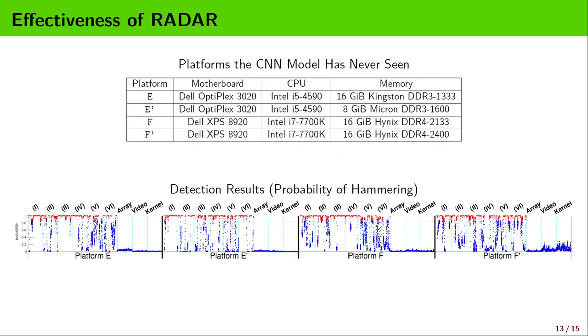How about the platforms whose data has never been used in the original CNN model training? We evaluate our current CNN model on two new platforms, E and F, and we also change the memory modules of E and F to form another new platforms, E' and F'. Their data has never been used in training. From the results, we can observe the model works well for recognizing potential Rowhammer attacks on these new platforms.